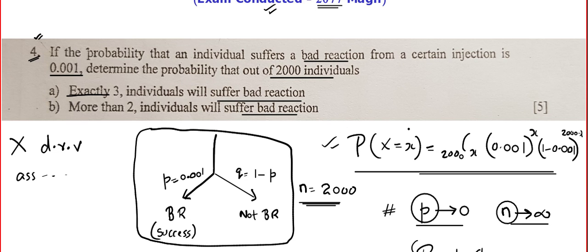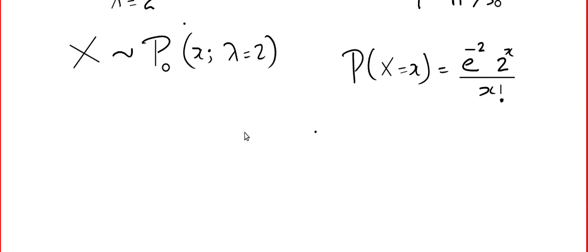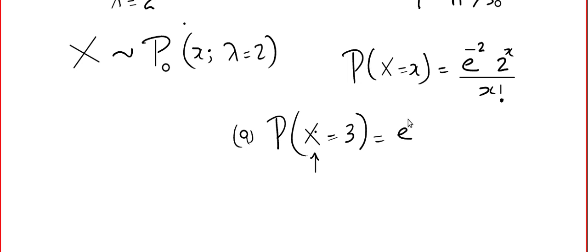The first question asks: exactly three individuals will suffer bad reaction. We have already defined capital X as the number of people who will end up having bad reaction. So in part A, the required probability is P(X=3) = e^(−2) × 2³ / 3!. Using a calculator, the answer is 0.1804.